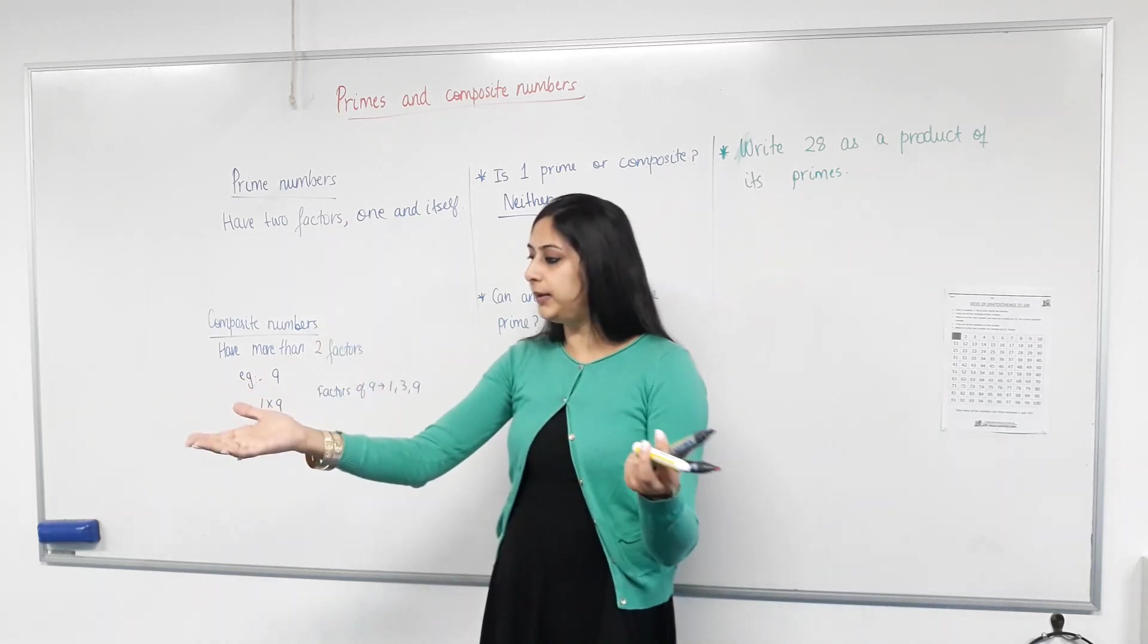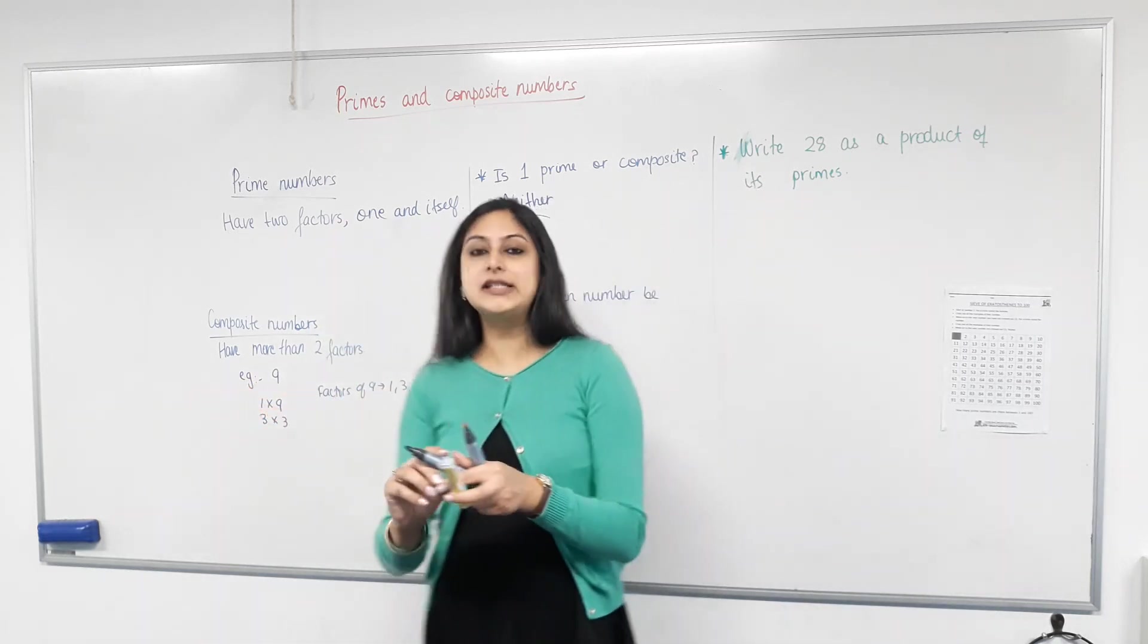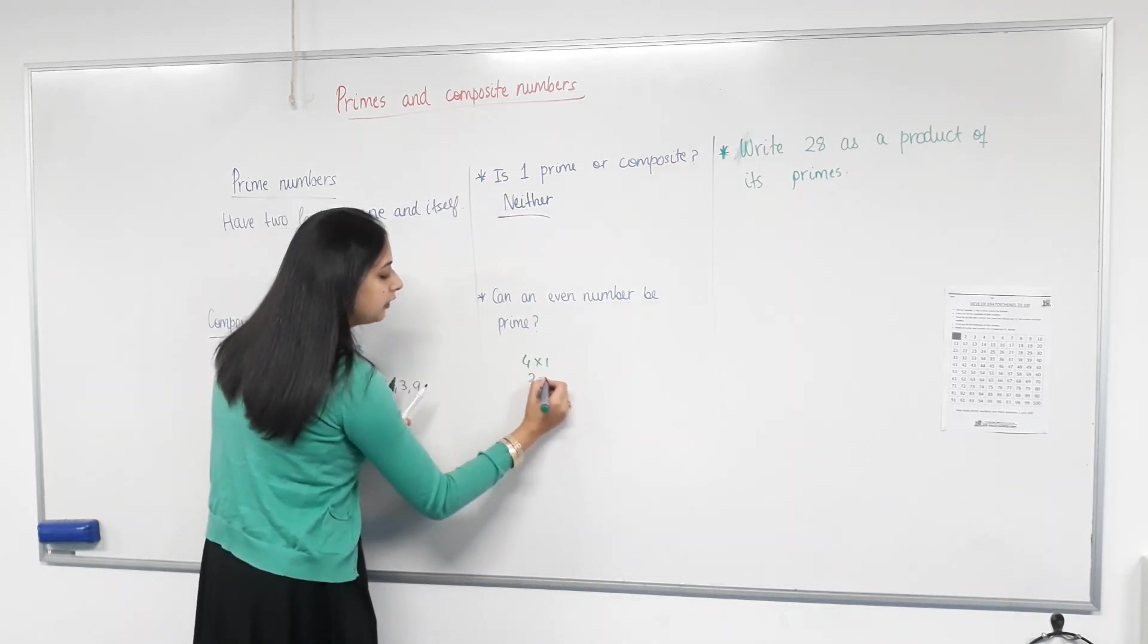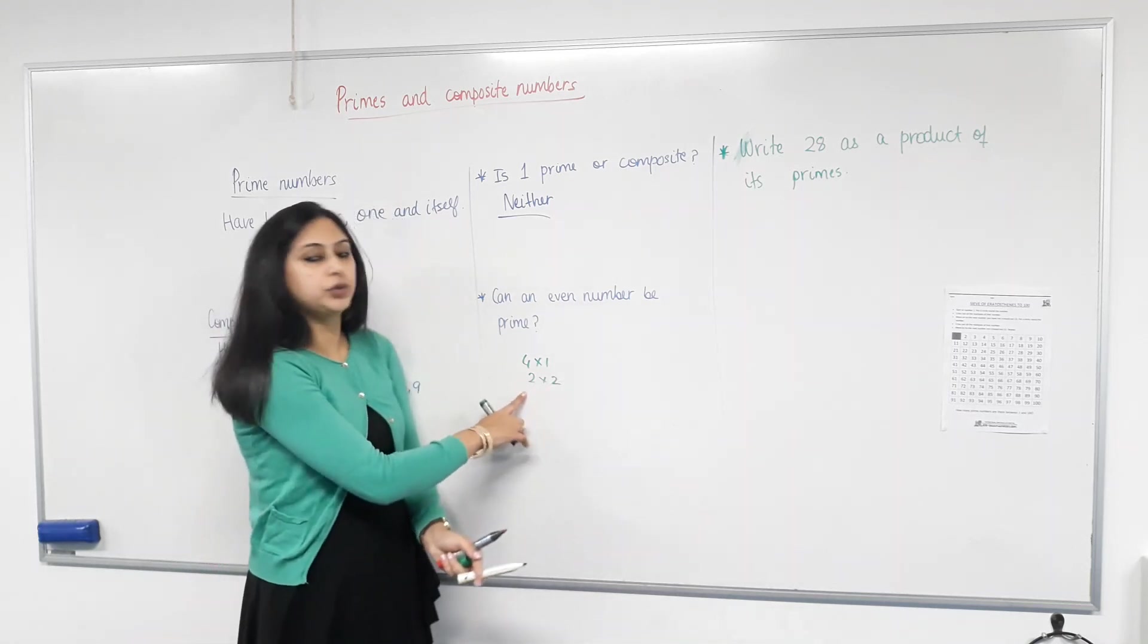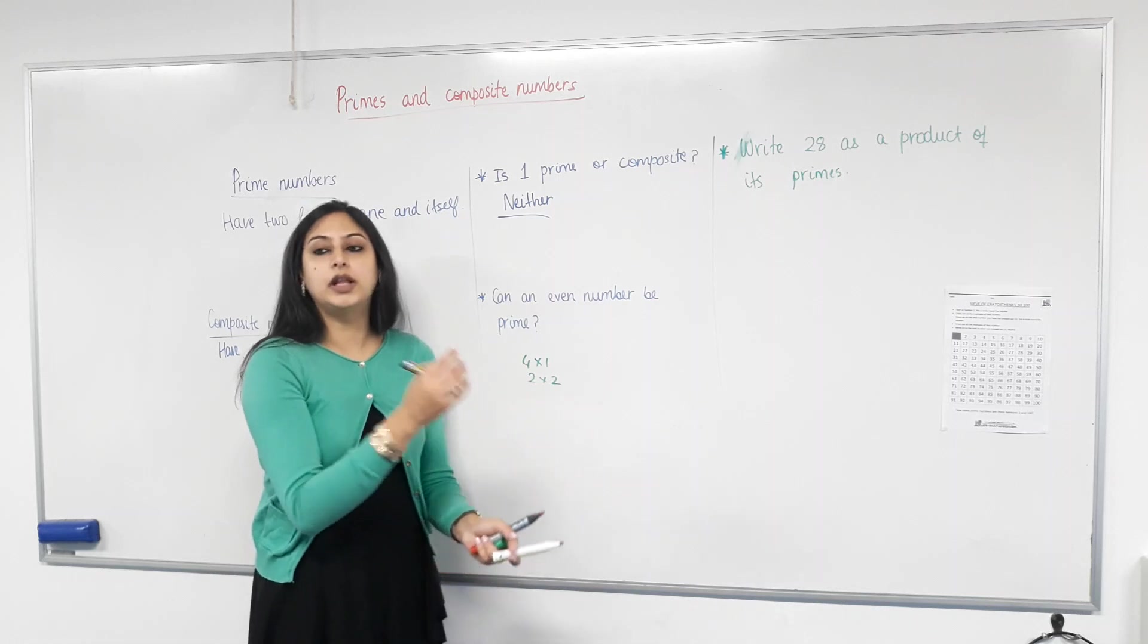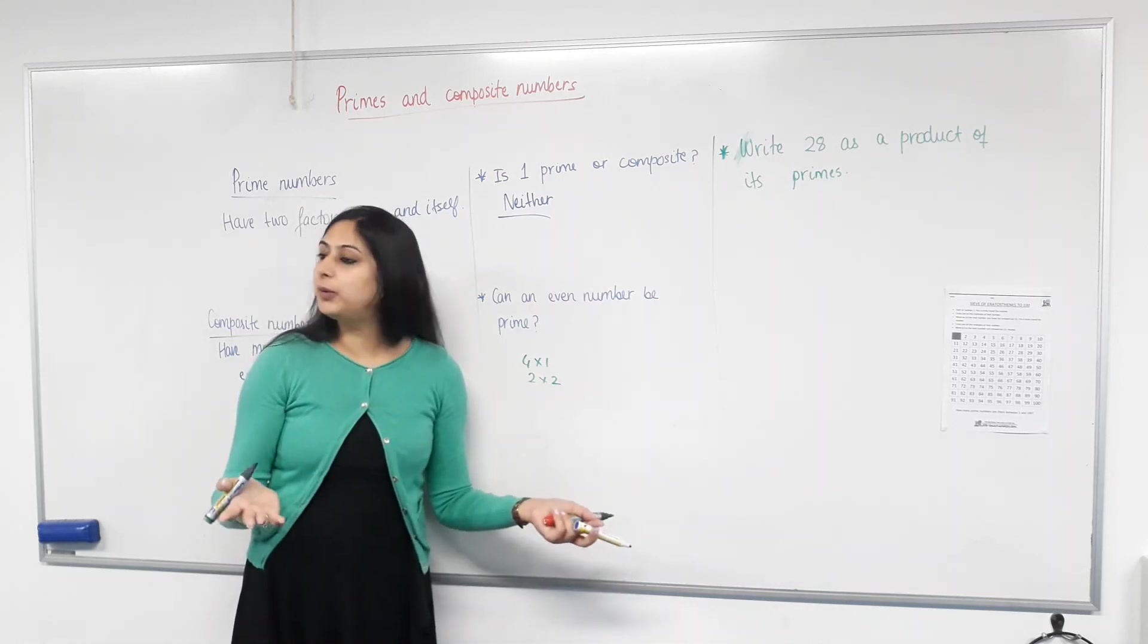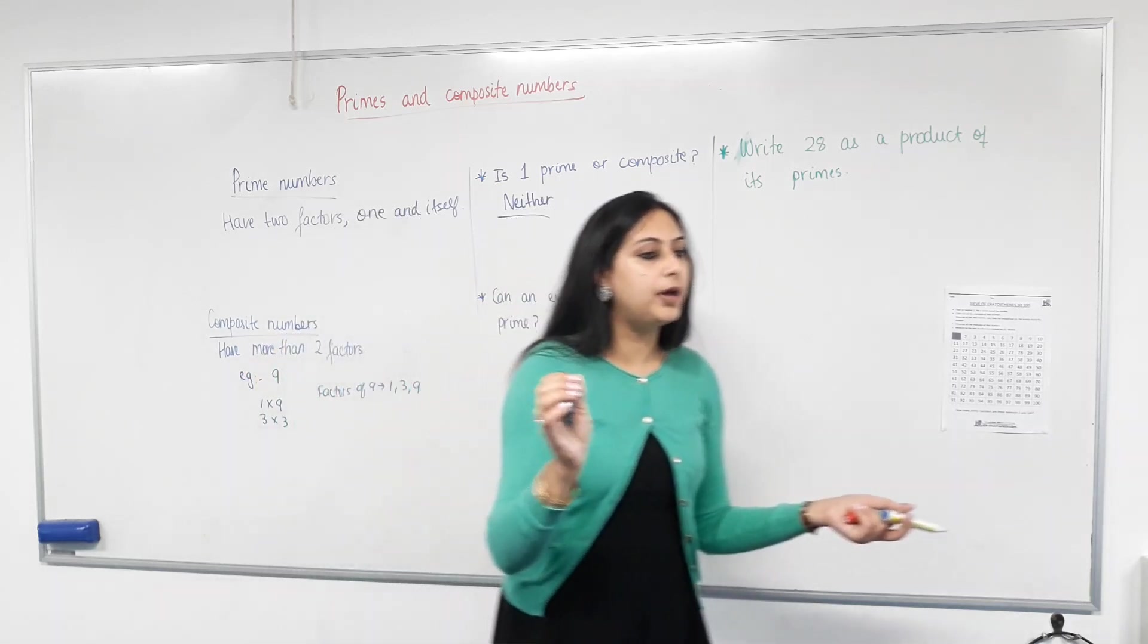So, let's come up with an even number. Four. Let's find factors of four. Four times one? Two times two. Won't all other even numbers, other than two, will always have two as their factor? Yes. So, they'll have at least that number itself, one and two. So, can it be prime? No. So, what's the only even prime number? Two.